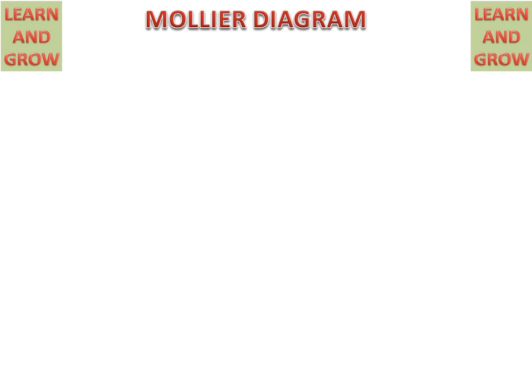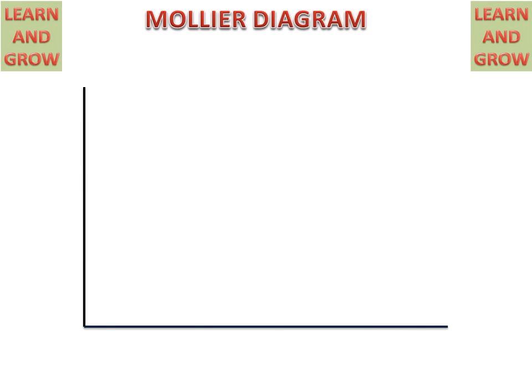Today we will discuss the Mollier Diagram and how we can read it. This graph has two lines: the vertical line is called the enthalpy line or H line, and the horizontal line is called the entropy line or S line.